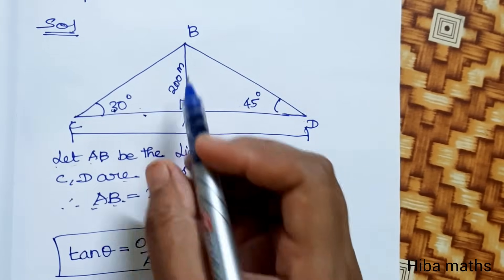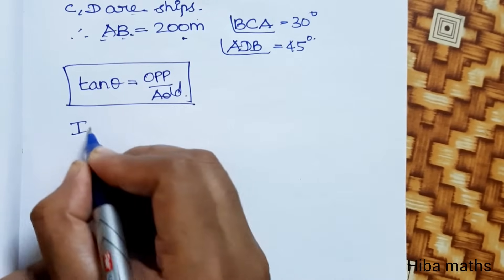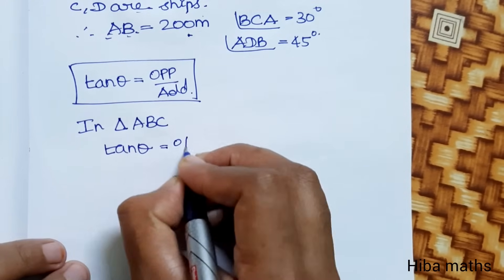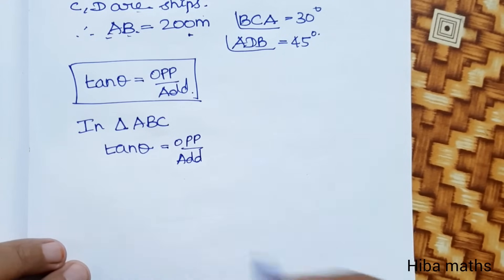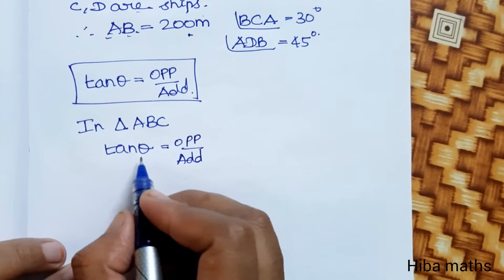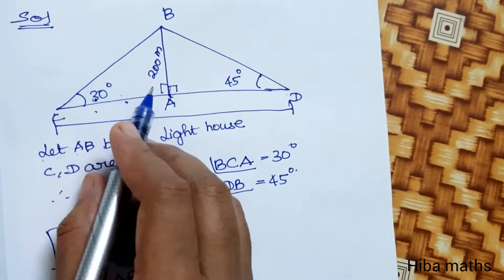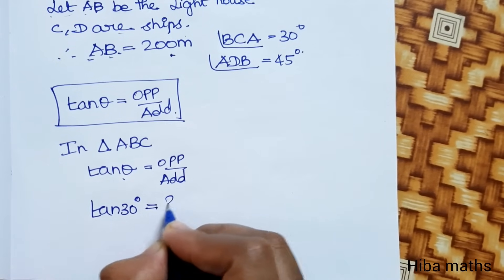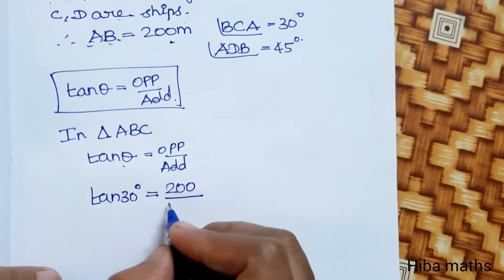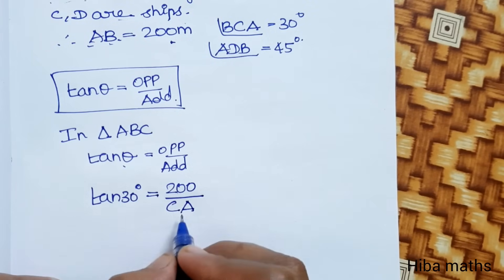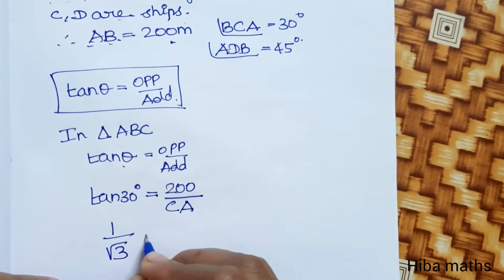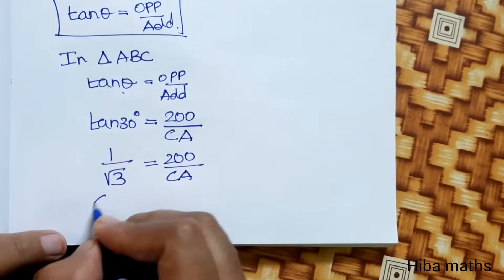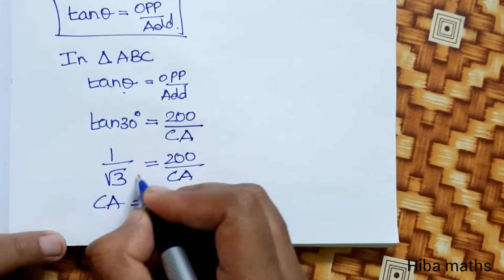The first triangle is triangle ABC. In triangle ABC, tan theta is equal to opposite by adjacent. The opposite side is 200. So substituting, tan 30 degrees is equal to 200 divided by CA. The value of tan 30 is 1 by root 3, which equals 200 by CA. Therefore CA is equal to 200 root 3.